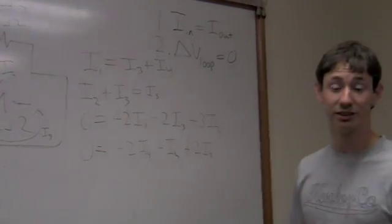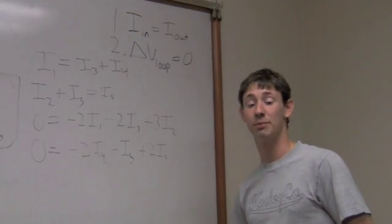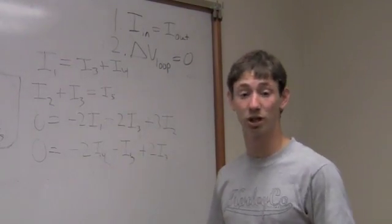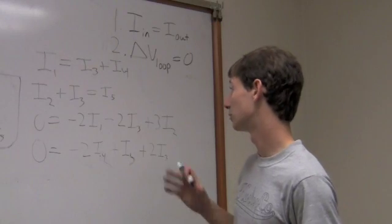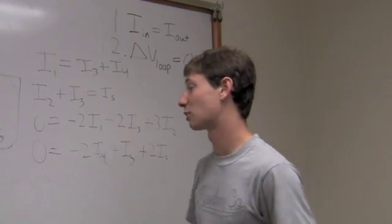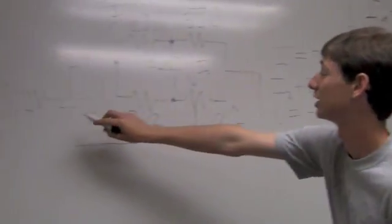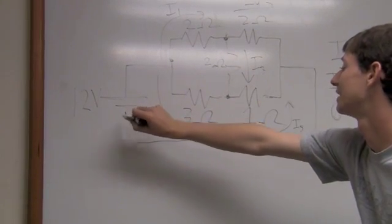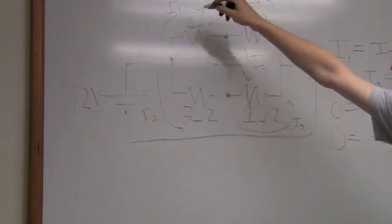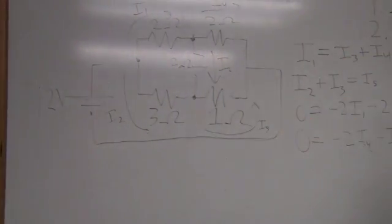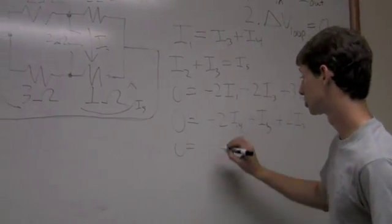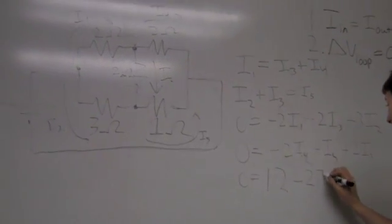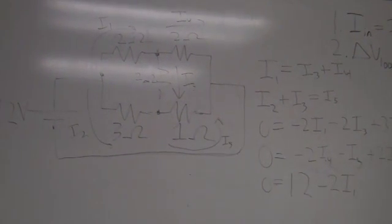Now, we have five variables, so that means we need one more equation. Because you always need an equal number of equations as you do variables. And our variables are all the different currents. So, since we have five of them, we need one more equation. So, this equation is going to come using the battery. So, we're going to do a loop starting right behind the battery. And we're going to travel through the battery, then through I1 and I4, and back around. So, this is going to be 0 equals 12 minus 2I1 minus 2I4.